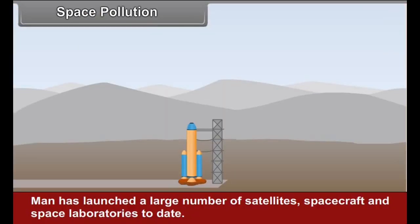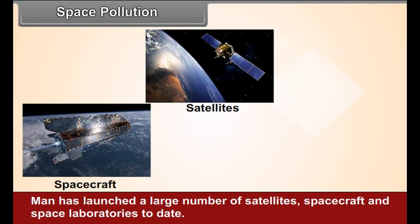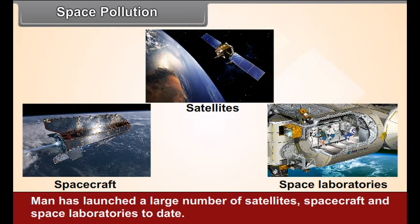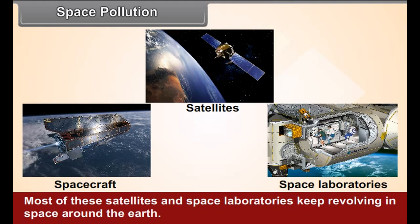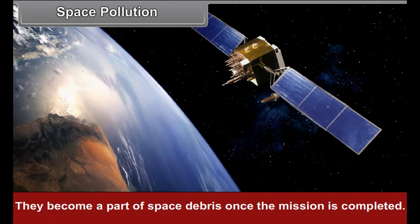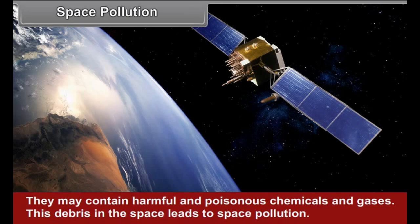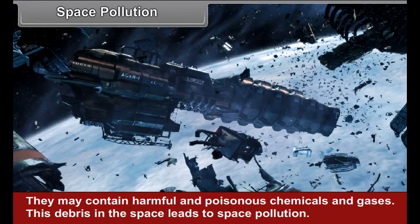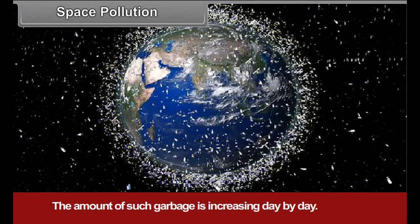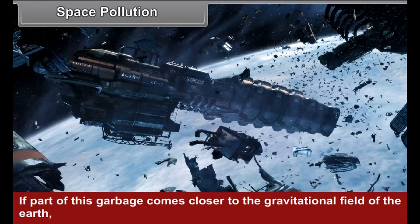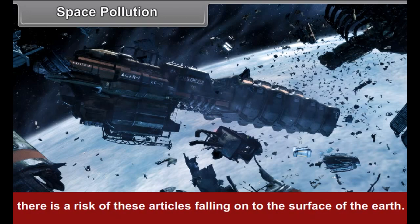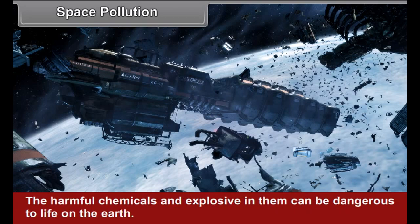Space Pollution: Man has launched a large number of satellites, spacecrafts, and space laboratories to date. Most of these satellites and laboratories keep revolving in space around the Earth, and they become a part of space debris once the mission is completed. They may contain harmful and poisonous chemicals and gases. This debris in space leads to space pollution, and the amount of such garbage is increasing day by day. If a part of this garbage comes closer to the gravitational field of the Earth, there is a risk of these articles falling onto the surface of the Earth. The harmful chemicals and explosives in them can be dangerous to life on Earth.